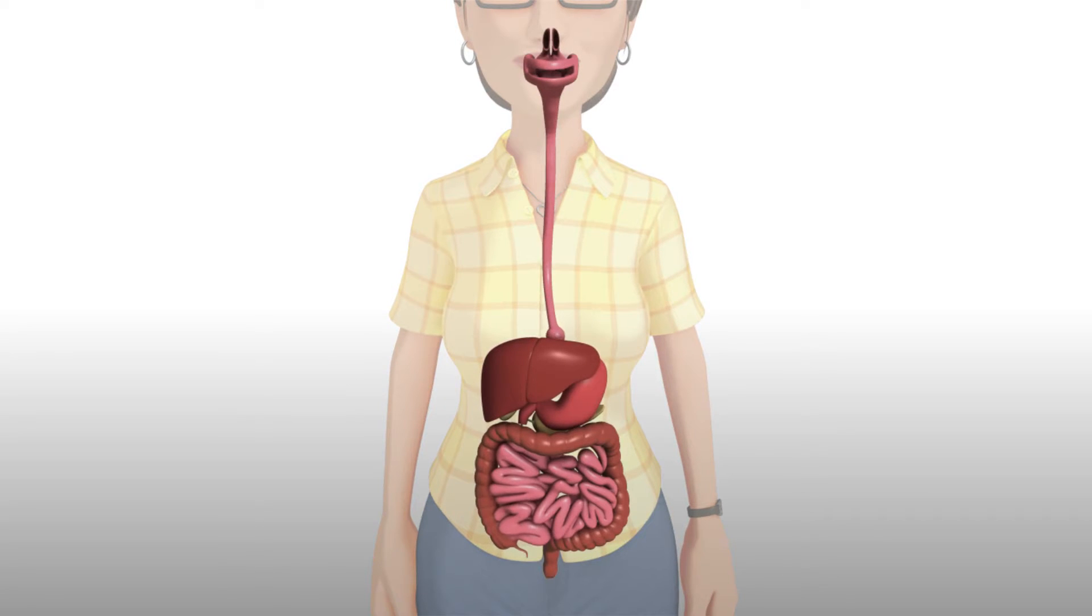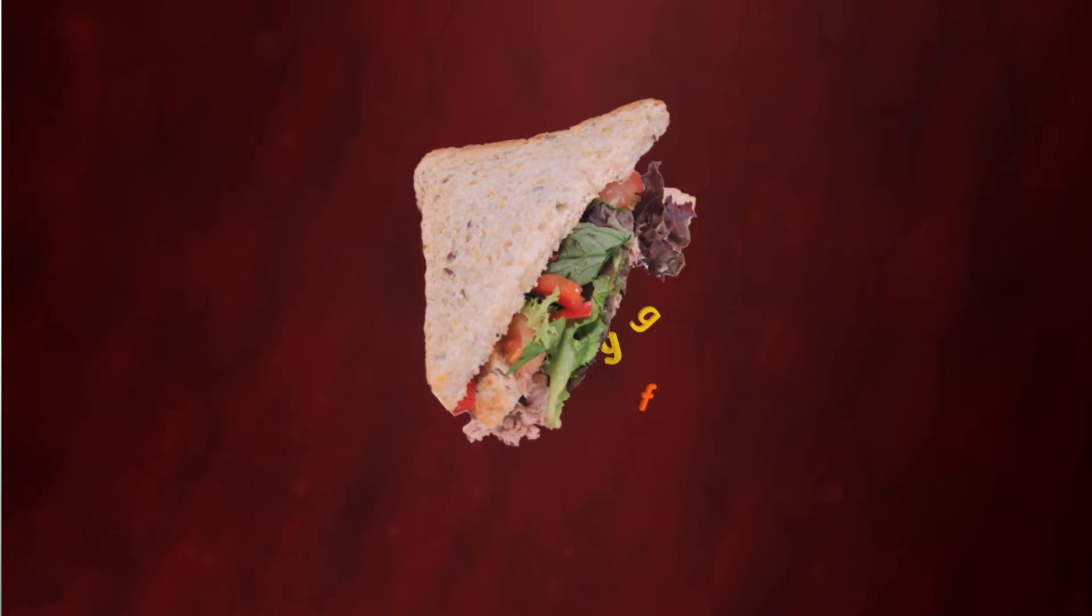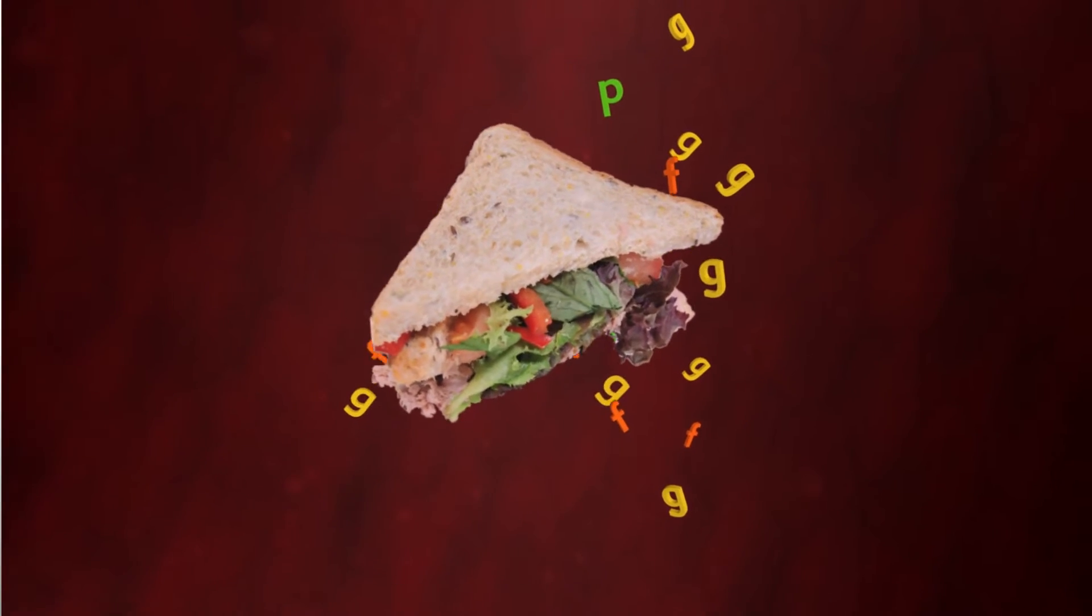Food is made up of carbohydrates, fats, and protein. These nutrients are digested into smaller parts, which are used by the body for different purposes.